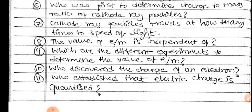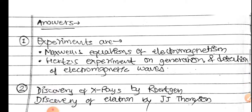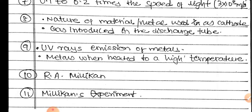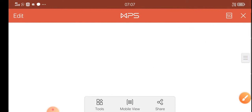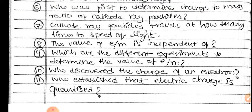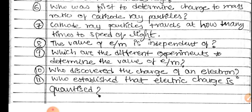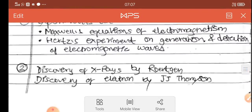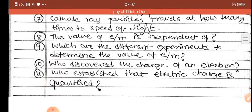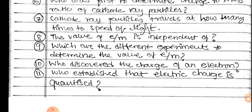Which are the different experiments to determine the value of e/m — the charge-to-mass ratio of the electron? Who discovered the charge of an electron? The value of the electron's charge is the object of Millikan's method using an electric field.